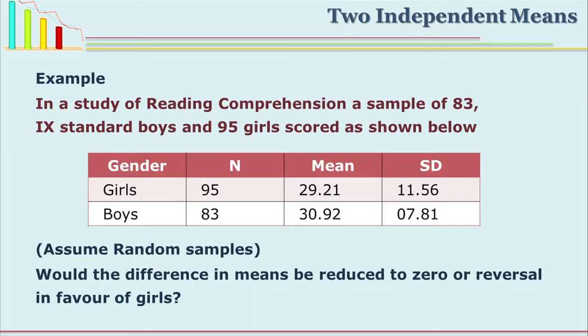Let us take one example. In a study of reading comprehension, a sample of 83 9th-standard boys and 95 girls scored as follows: 95 girls had a mean of 29.21 and standard deviation of 11.56; 83 boys had a mean of 30.92 and standard deviation of 7.81. We assume normal distribution. The null hypothesis is that there is no true difference in boys' and girls' reading comprehension. Now how do we prove or disprove this?